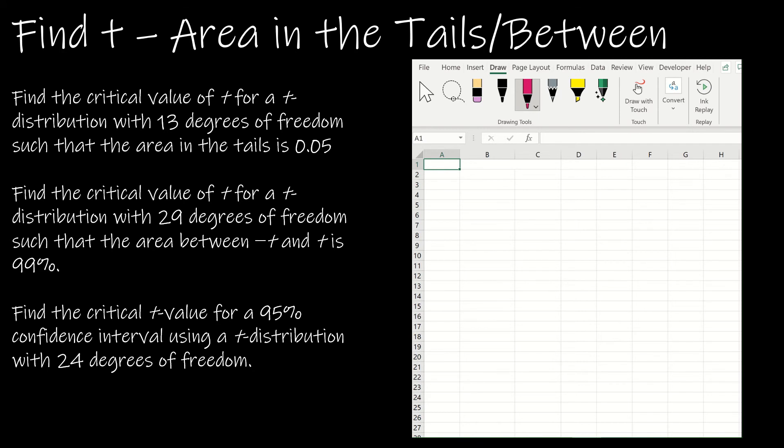There's a couple of ways to do this. If there's 5% in the tails, half of it goes here and half of it goes here. If the total in the tails is 5%, then there's 95% here. The area to the left of this is 0.975.